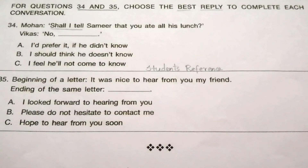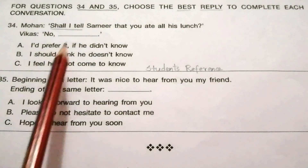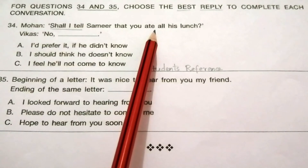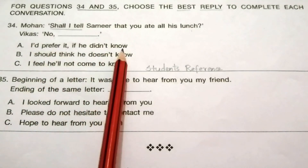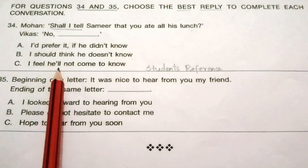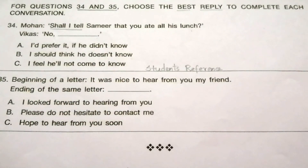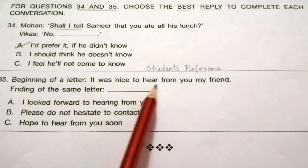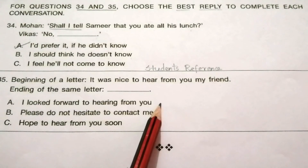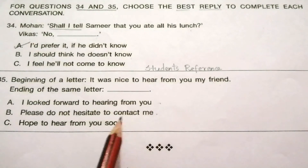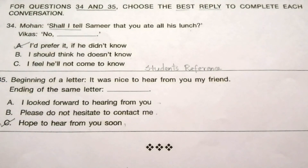For questions 34 and 35, choose the best reply to complete each conversation. Question 34: Mohan says 'Shall I tell Samit that you ate all his lunch?' The reply ___. Options: A) No, I would prefer it if he didn't know, B) I should think he doesn't know, C) I feel he will not come to know. The answer is A — no, I would prefer it if he didn't know. Question 35: Beginning of a letter — 'It was nice to hear from you, my friend.' Ending of the same letter ___. Options: A) I looked forward to hearing from you, B) Please do not hesitate to contact me, C) Hope to hear from you soon. The answer is C — hope to hear from you soon.